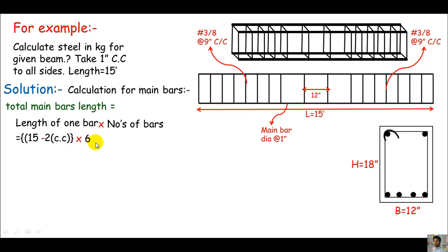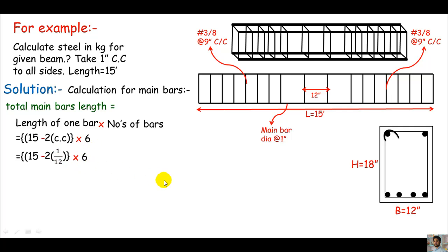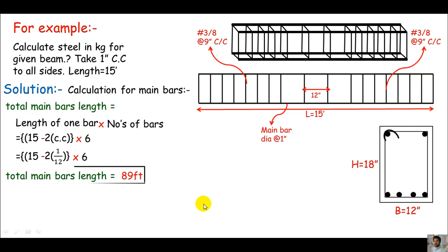I multiply this by 6, because you can clearly see from the beam section that the main bars are 6 in number. Plugging in the values: 15 minus 2 times (1/12) — since 1 inch concrete cover is divided by 12 to convert inches to feet — times 6, which is the number of main bars. Doing the mathematics, the total main bars length comes out to 89 feet.